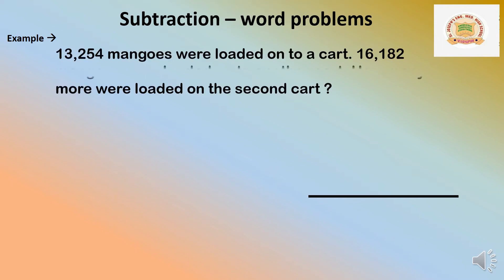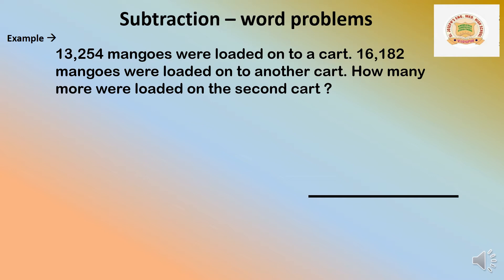Here the question will not be given directly - it will be given in sentences, like market scenarios involving selling things, buying things. For example: 13,254 mangoes were loaded on the first cart. In that cart, how many mangoes were loaded? 13,254. And 16,182 mangoes were loaded onto another cart. So there are two carts.